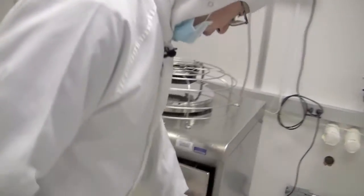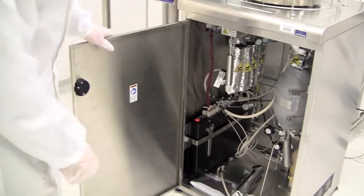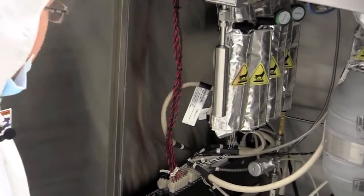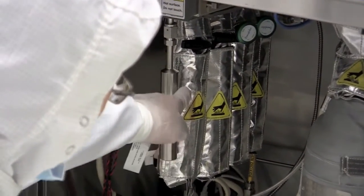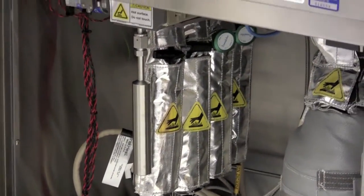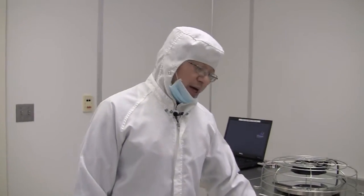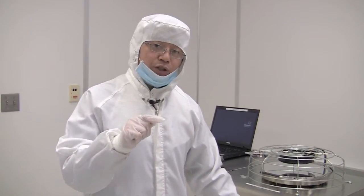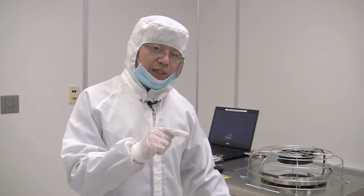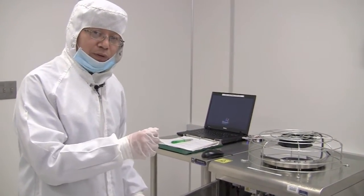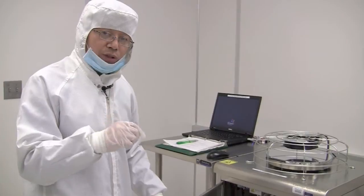Here, inside the cabinet, are the precursors for the high-k materials. One is for hafnium oxide and another one is for aluminum oxide. The one for the aluminum oxide is pyrophoric. That means it will ignite when exposed to the air. So please close the valve and open the valve gently when you use it.